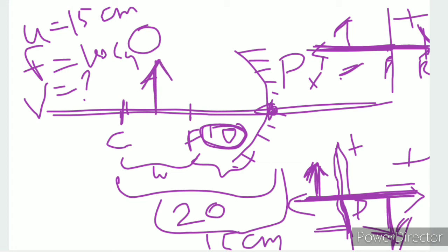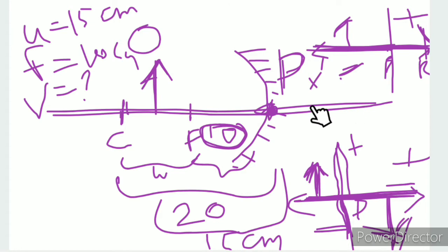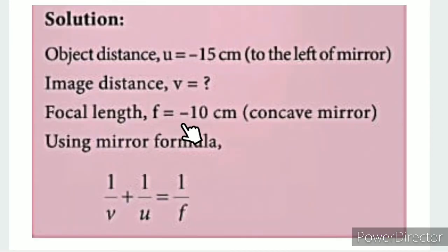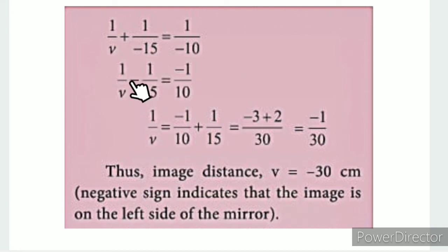The objective is at origin P. Left side is negative. The focal length is on the left-hand side, so f is also negative. Applying the mirror formula: 1 by v plus 1 by u equals 1 by f. Substituting: 1 by v plus 1 by (minus 15) equals 1 by (minus 10). Solving for 1 by v.